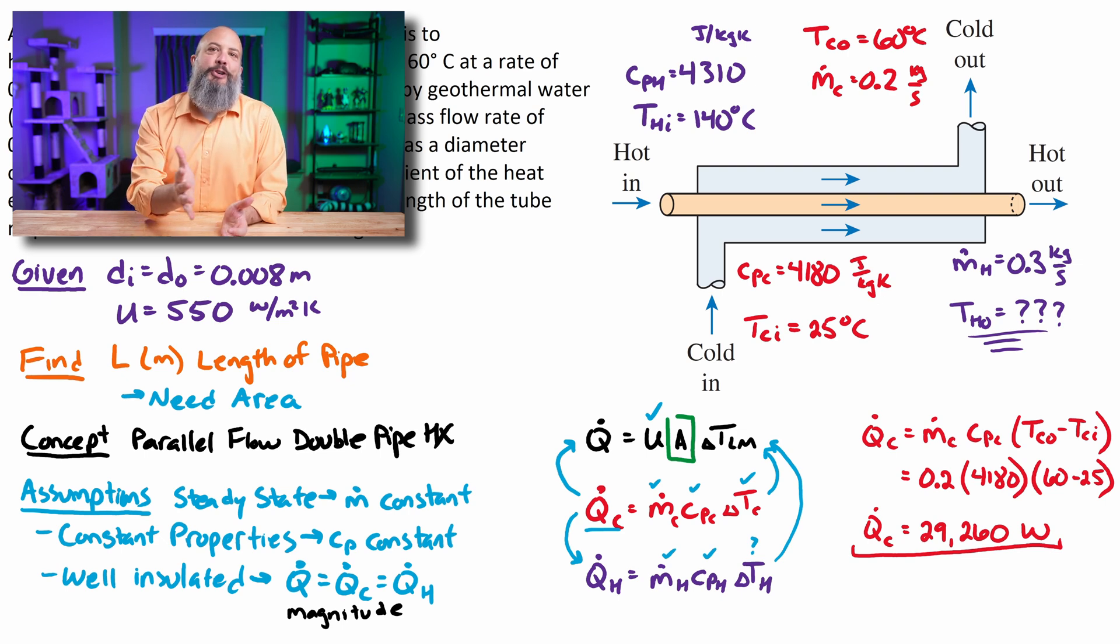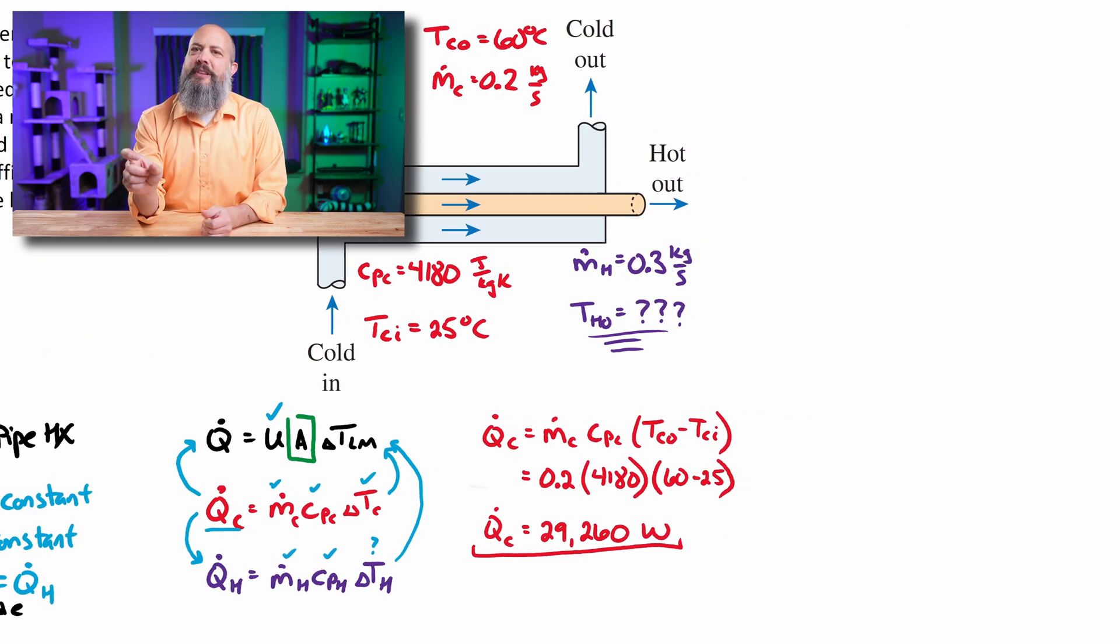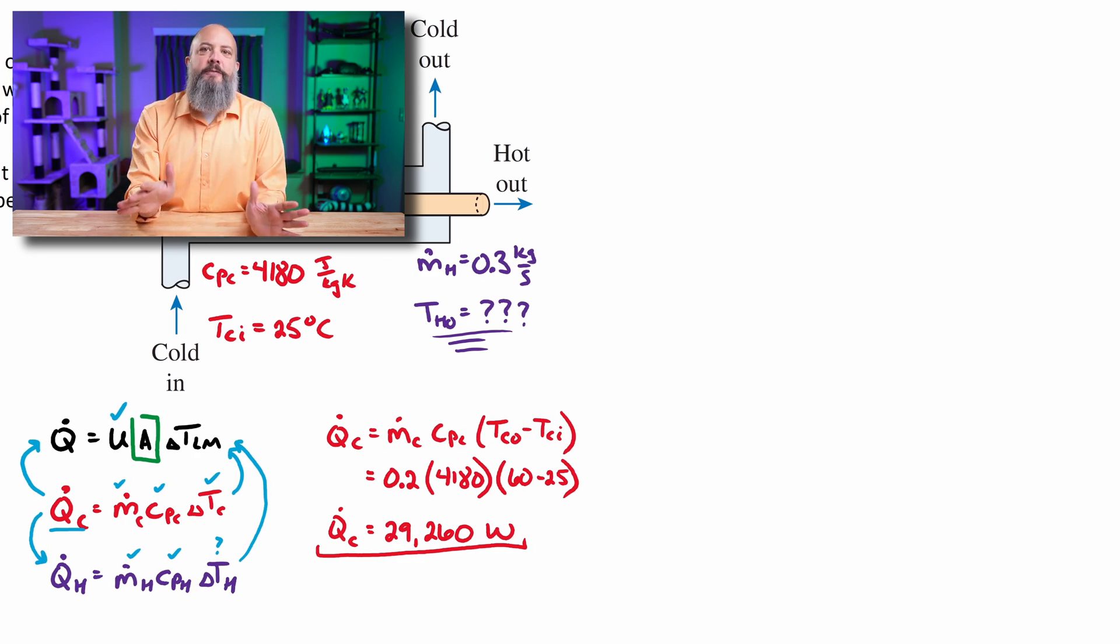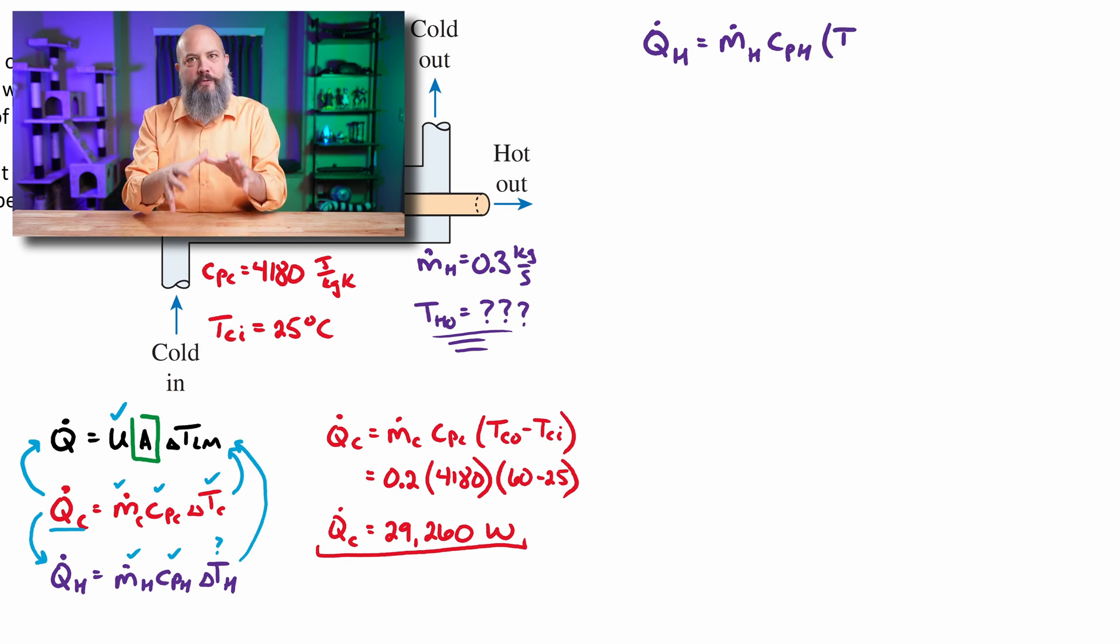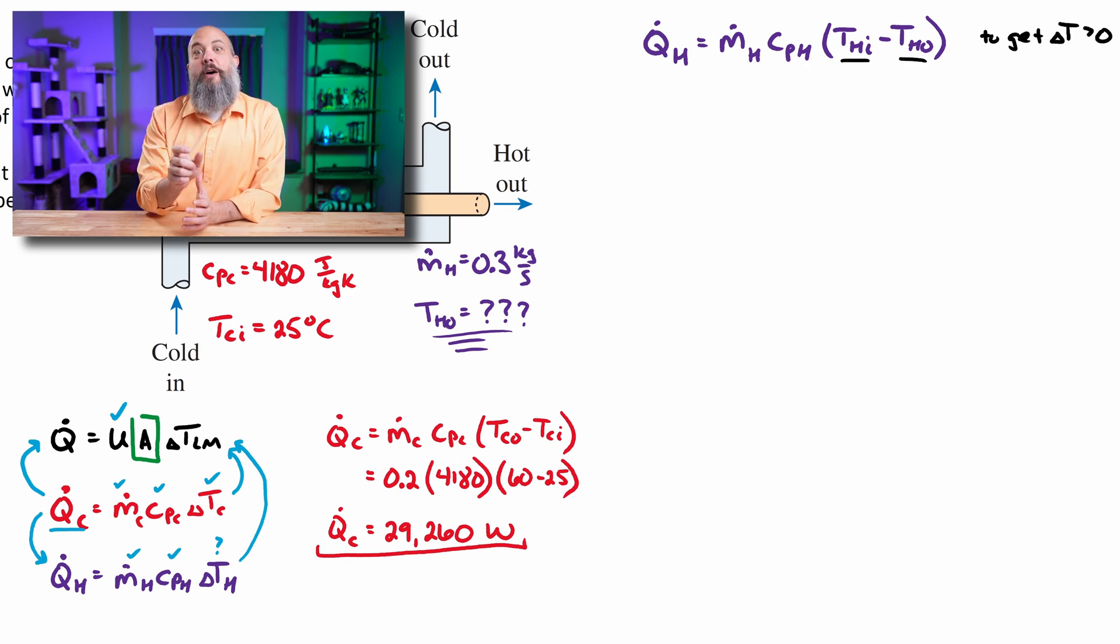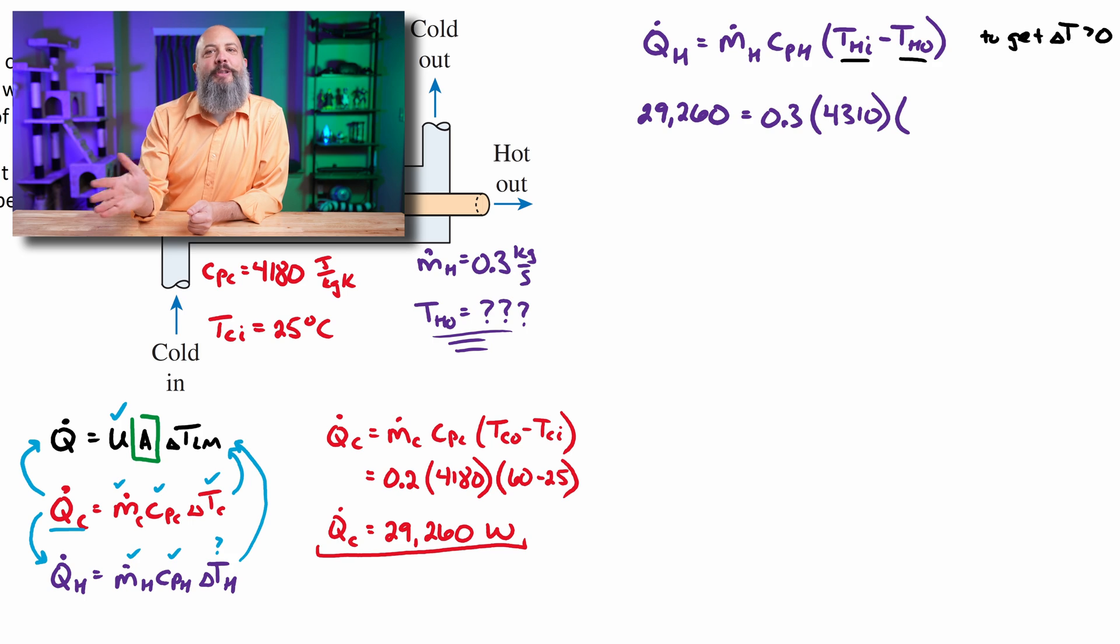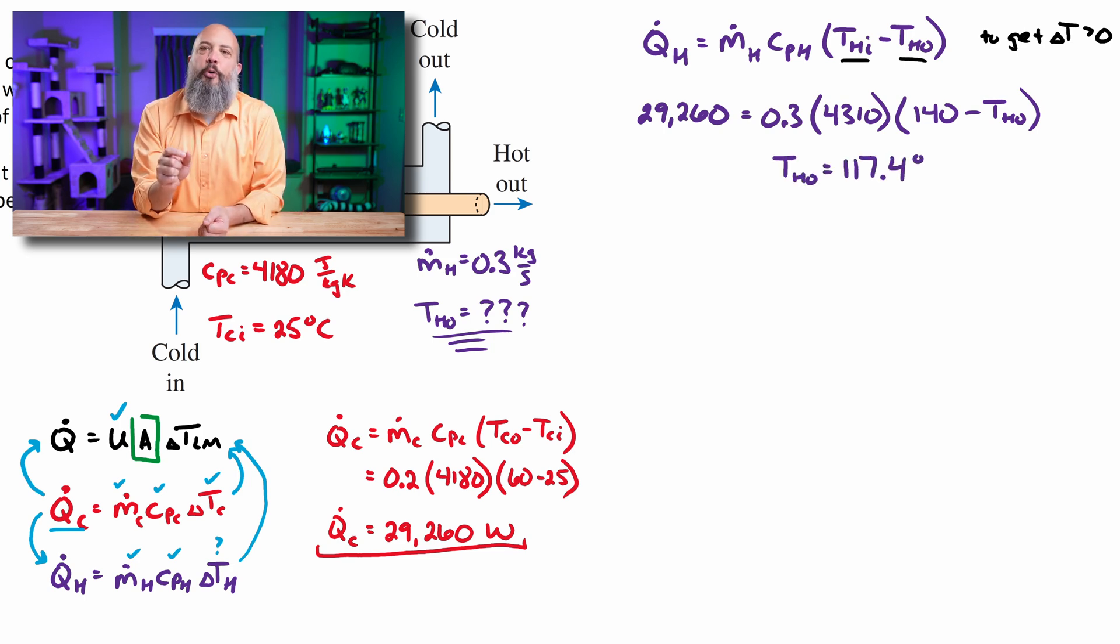So for my hot flow Q dot equals M dot CP delta T, I am rewriting my delta T as hot inlet minus hot outlet. That's different than from the cold temperatures. I did cold out minus cold in. And the reason for this is that I just want my Q term to be an absolute value. So I'm doing the higher temperature minus the lower temperature just to get an absolute value for Q. If we wanted to strictly adhere to sign conventions, usually heat into a system is positive and heat leaving a system is negative. If we kept our outlet minus inlet formula, that would give us a Q_H of negative 29.26 kilowatts. But it's so much easier to just deal with absolute value. So 140 minus T hot out for the temperature, 0.3 and 4310 and then the 29.260 for Q dot. This gives us a hot temperature outlet of 117.4 Celsius.